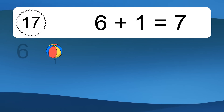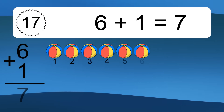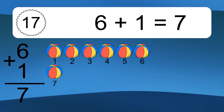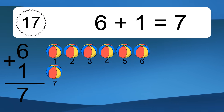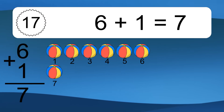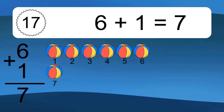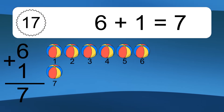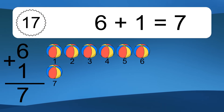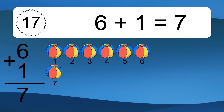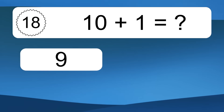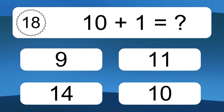6 plus 1 equals what? 6 plus 1 equals 7. Let's count it: 1, 2, 3, 4, 5, 6, 7.